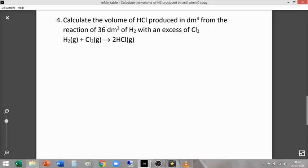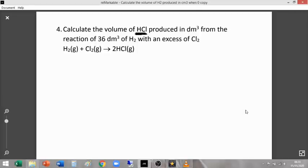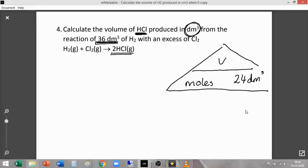OK, question 4. Calculate the volume of HCl, that's hydrochloric acid. That's hydrogen chloride, which when hydrogen chloride dissolves into an aqueous solution, so into water, it makes hydrochloric acid. So we've got the hydrogen chloride there. And we're working in decimetre cubed. That means our number of moles, volume 24 decimetre cubed, is the number that we're going to use there, with 36 decimetre cubed of hydrogen.